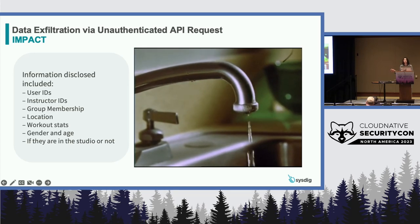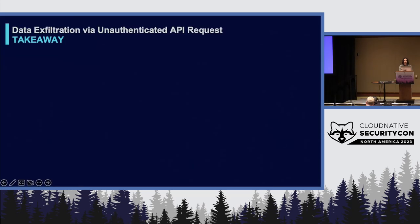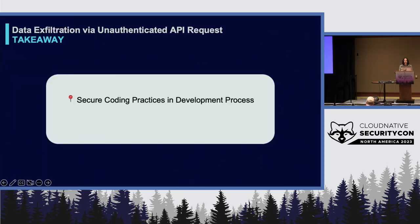This is the kind of information that could be useful for phishing campaigns or fraud campaigns in the future. A takeaway here is that you should have secure coding practices built into the development process. This kind of vulnerability could probably have been discovered by an application penetration test by a third party. You can also consider API security tools to detect an attacker abusing API calls or trying to pull down large amounts of data through them.